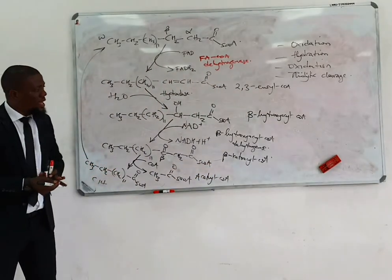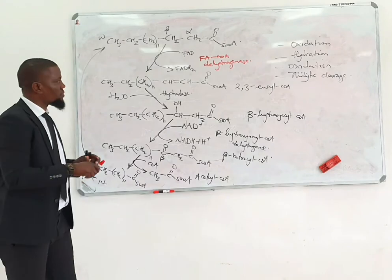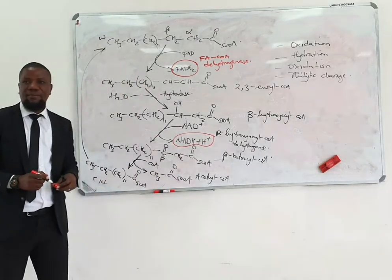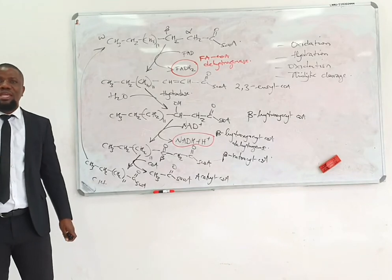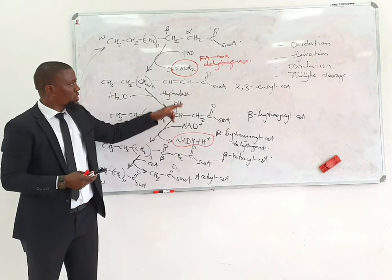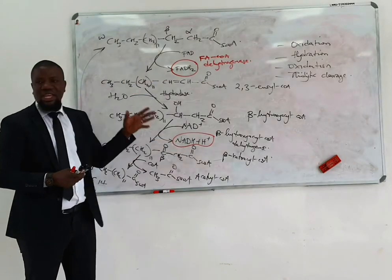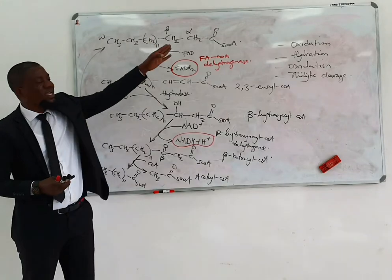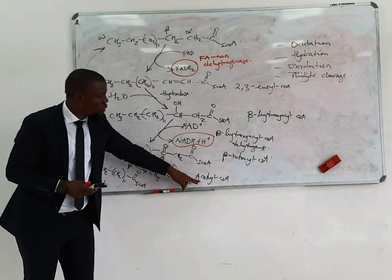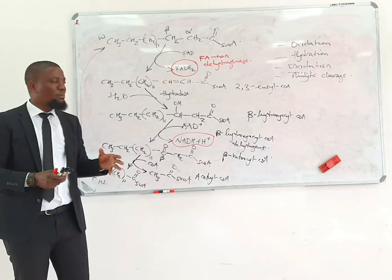Each cycle of beta oxidation you are actually removing an acetyl-CoA and at the same time you are producing energy. Beta oxidation is going to produce a large amount of energy in the form of reduced coenzymes, which is FADH2 and NADH. You can calculate how much energy is produced from a fatty acid by simply knowing how many carbons it has, because from each cycle you produce an acetyl-CoA, FADH2, and NADH.